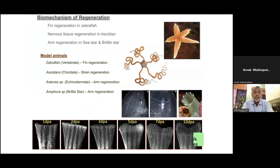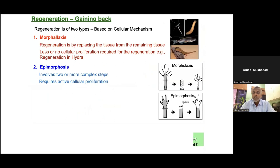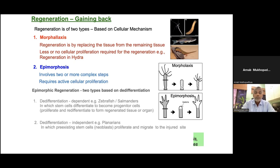We are trying to understand the biomechanism of fin regeneration in zebrafish. The fin here is nothing but my arm, my hand, or my leg. We also study nervous tissue regeneration, or brain regeneration, in the ascidian tunicate, and arm regeneration in Asterias rubens and Ophioderma. Regeneration is one of the oldest ongoing research areas across the globe. Based on the cellular mechanism, regeneration is of two types: morphallaxis and epimorphic. Morphallaxis is the simplest form of regeneration where no or little cellular proliferation is required.